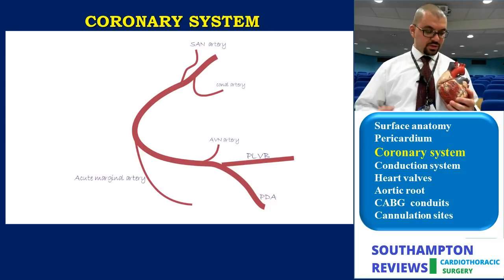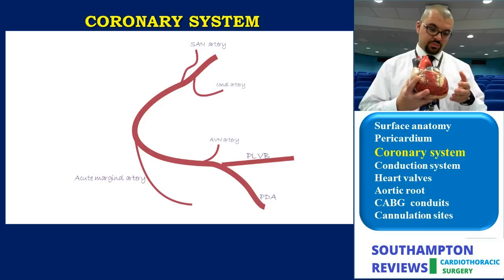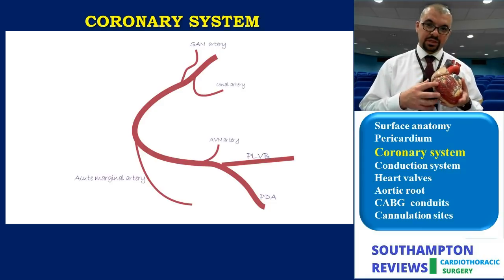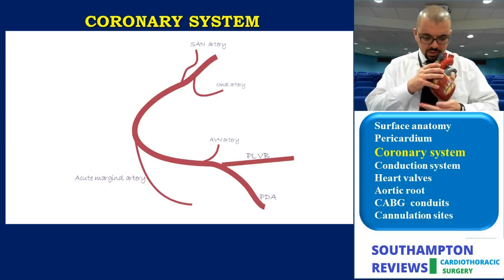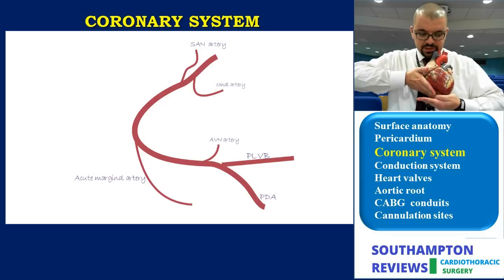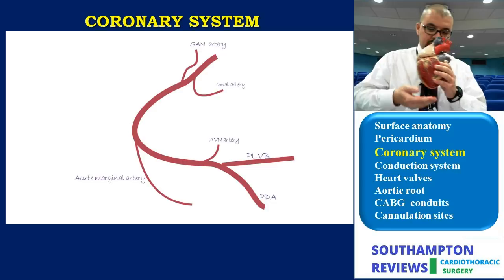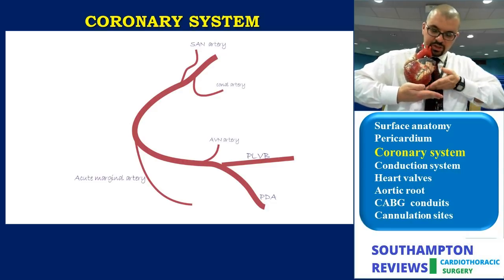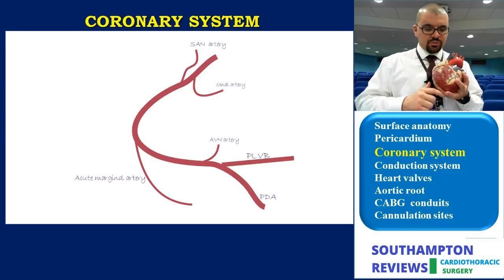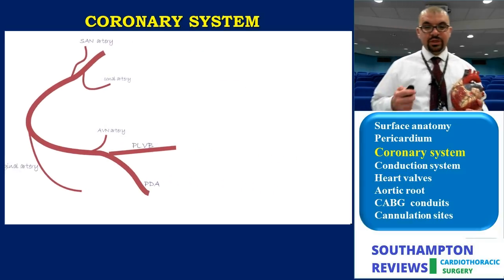It is important to understand why the branches on the right are referred to as acute marginals while those on the left are obtuse marginals. If you draw an imaginary line through the apex, the arteries traveling on the right side form an acute angle, whereas the arteries traveling on the left side create an obtuse angle — hence acute marginals on the right and obtuse marginals on the left.